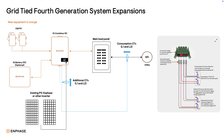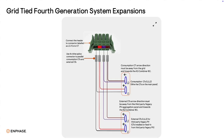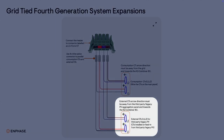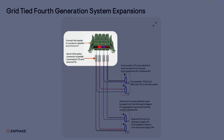Let's zoom in to see how this is done. Consumption CTs are installed on the utility L1 and L2 feeders with the direction arrows pointing towards the IQ Combiner 6C. The additional consumption CTs are installed on the existing PV L1 and L2, also with the direction arrows pointing toward the IQ Combiner 6C. Both L1 consumption CTs are wired in parallel with inline splices to the L1 ports on the header, and the same is done for both L2 CTs. The header is connected to port 8 of the IQ Combiner 6C, which is labeled LC/consumption CT.